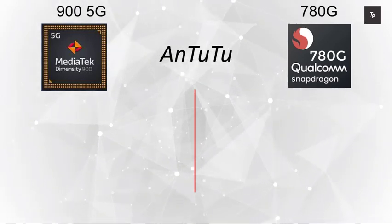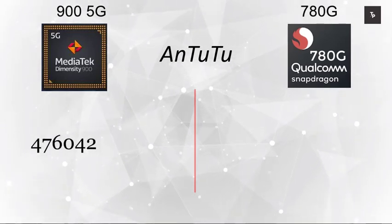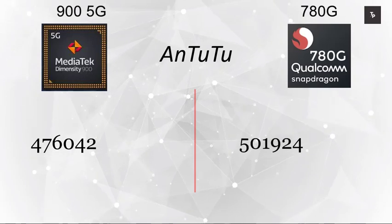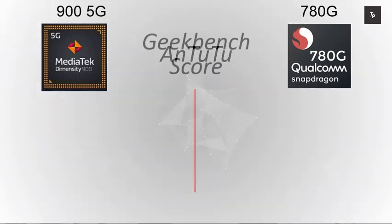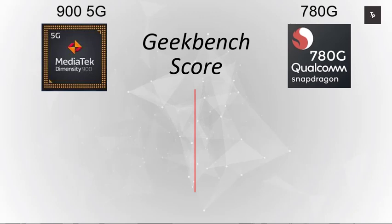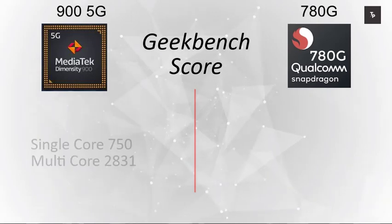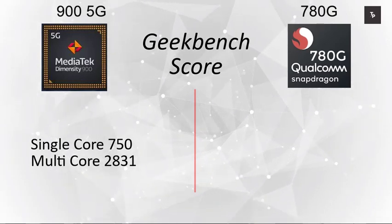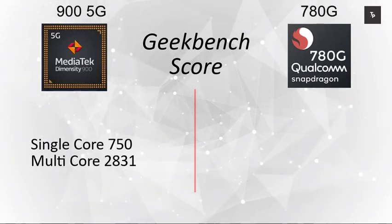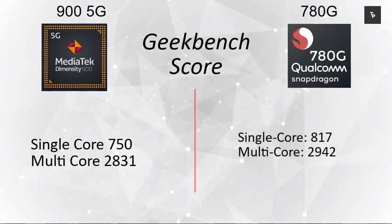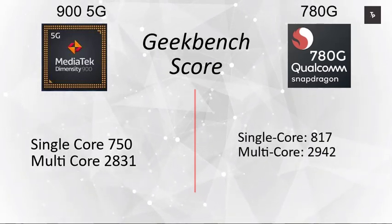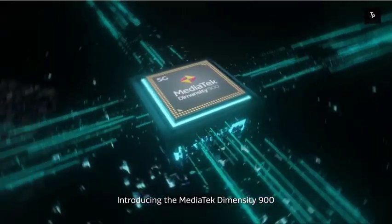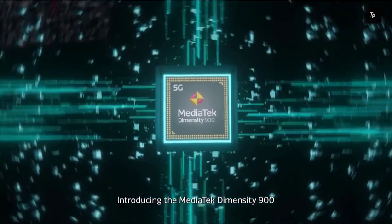Wrapping up with benchmark scores: on AnTuTu, the MediaTek Dimensity 900 5G scores 476,000, while the Snapdragon 780G scores 501,900. On GeekBench, the Dimensity 900 scores 750 single-core and 2800 multi-core, while the Snapdragon 780G scores 817 single-core and close to 3000 multi-core.